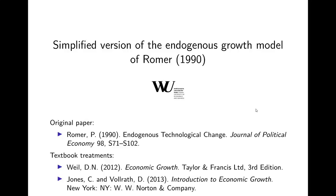Now I present a very simplified version of the endogenous growth model that Paul Romer proposed in 1990. The original paper is by Paul Romer, 'Endogenous Technological Change' in the Journal of Political Economy. Two textbook treatments I find nice and accessible are by David Weil, 'Economic Growth,' third edition, chapter 8, and Jones and Vollrath, 'Introduction to Economic Growth,' chapter 5.